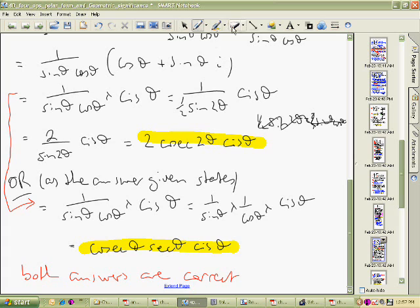They didn't put that in the back of the book. They just simply left it as 1 over sin and 1 over cos, which gives you cosec and sec. I think that's not as simplified as this myself. But in any case, they're both correct answers. So either way, they're both perfectly okay.